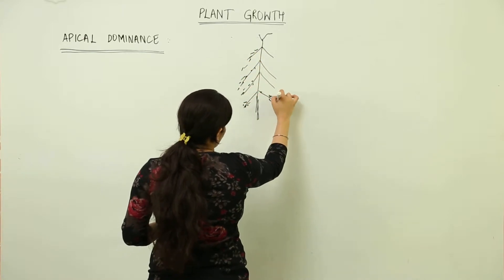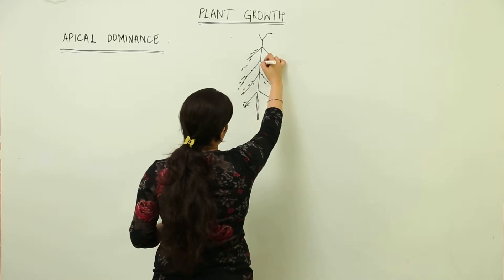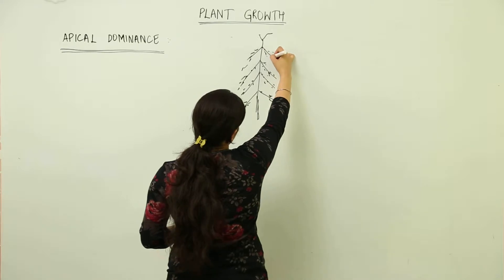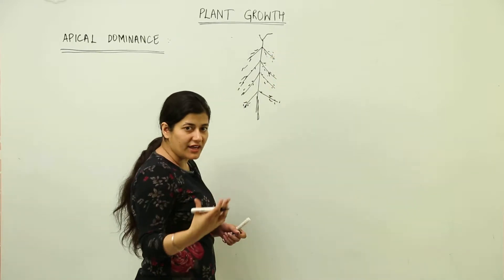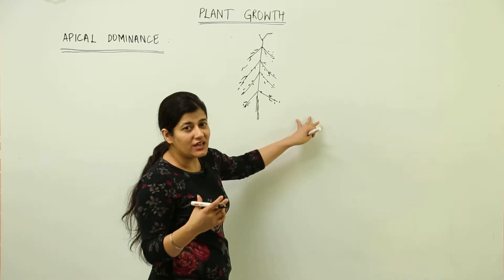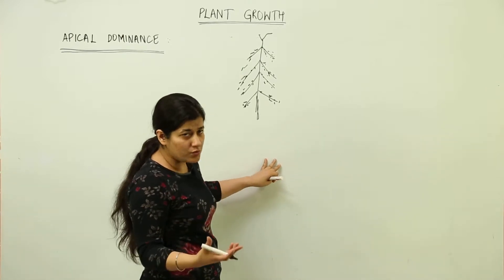Basically in all plants, apical dominance is the main reason they have survived. Plants which have evolved in terms of apical dominance have shown more evolution.